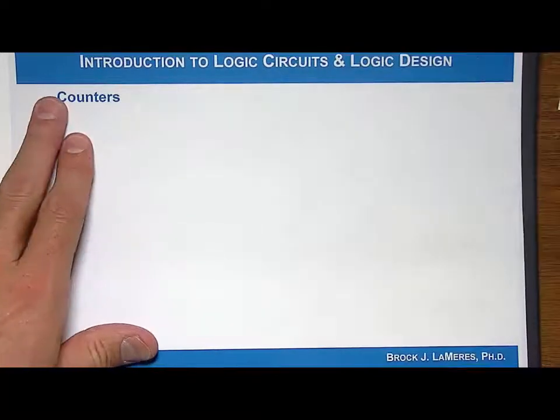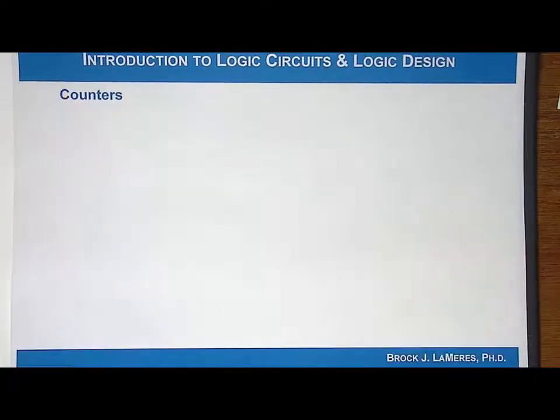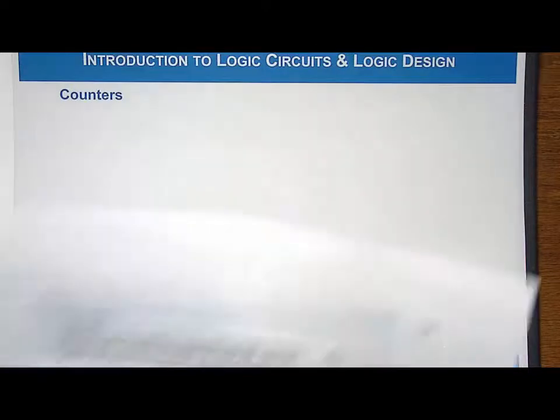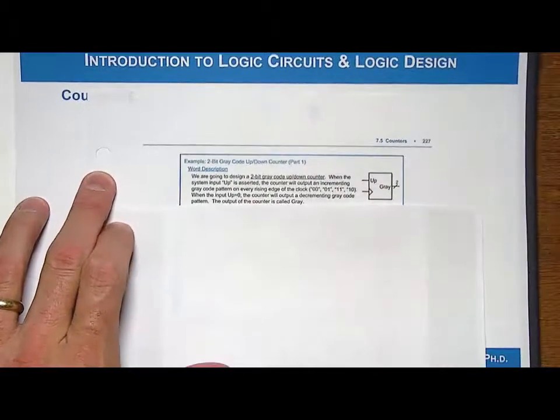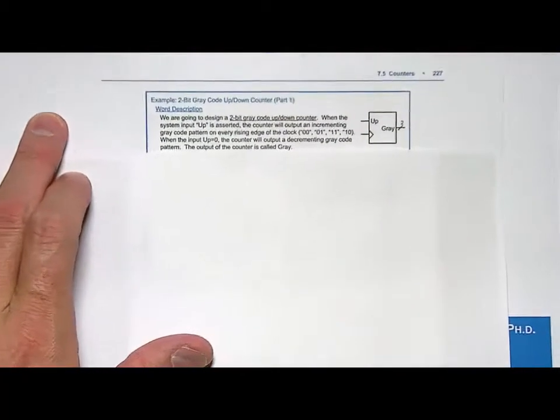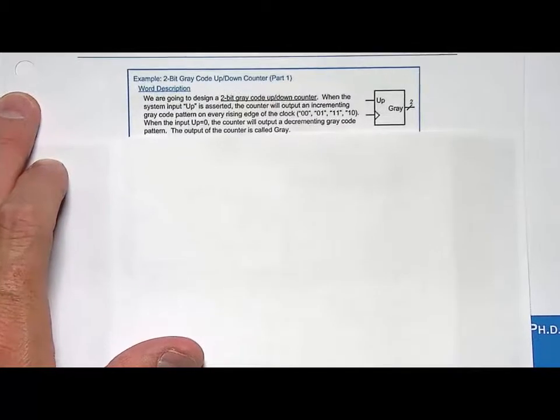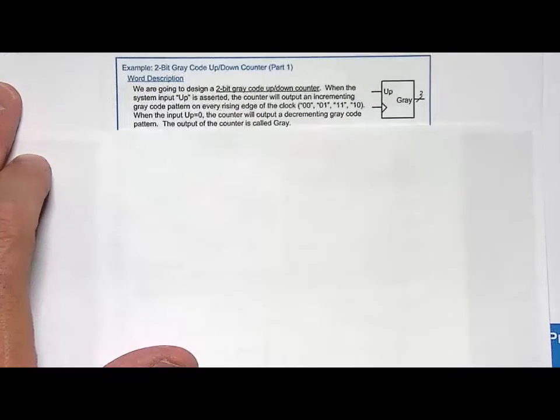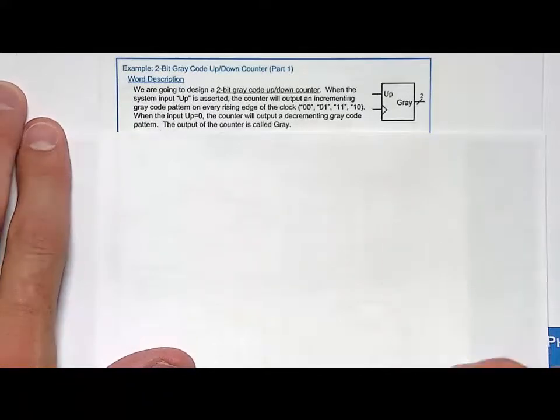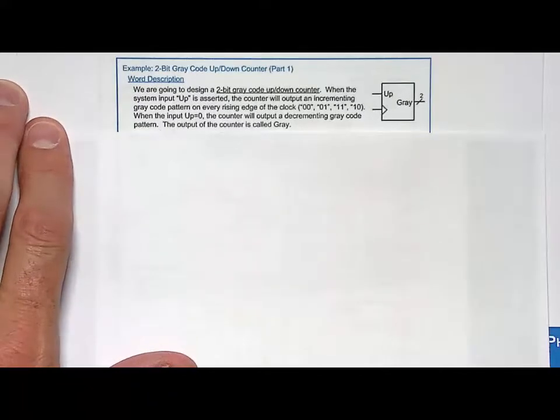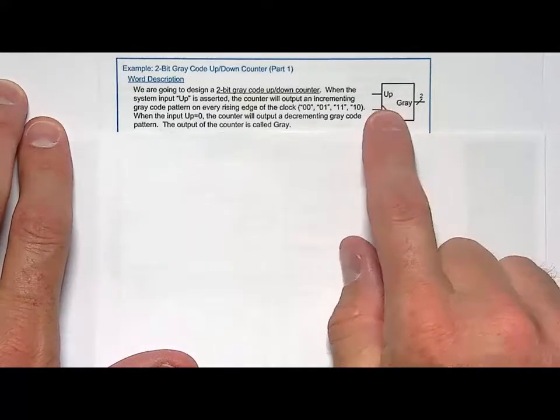So it needs to have an input into the system. Let's take a look at the block diagram. We'll have an input which we call up. So the output will still be called gray, we'll have a clock, and we'll have an up. And so if up is asserted, we will count up in a gray code manner. And then when it's a 0, we will count the other way.